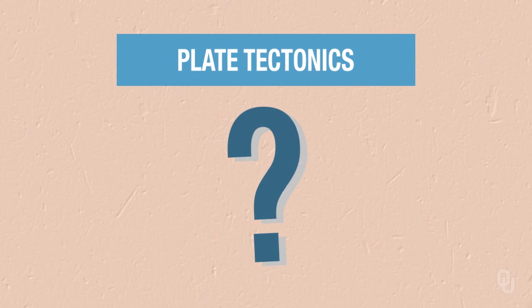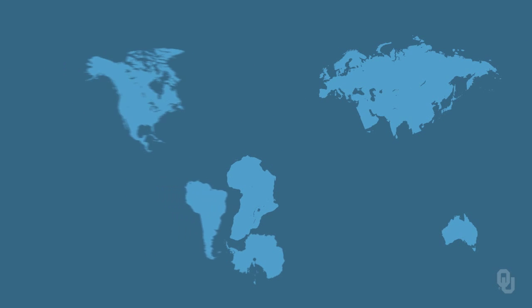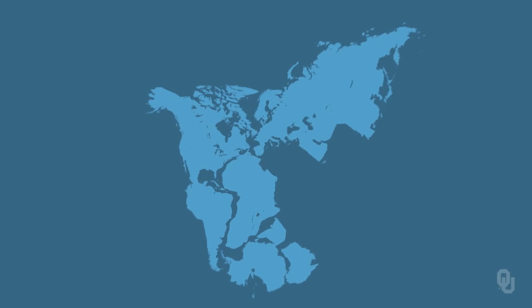What was his evidence for this? It was the fit of the continents — you can put all the continents together and they sort of fit together as a jigsaw puzzle. When you put the continents back together, mountain ranges would line up across different continents, and rock types would be found in logical places. For example, limestones, which form in warm shallow water, would be found near the equator. He also found that fossil distributions lined up across the continents.